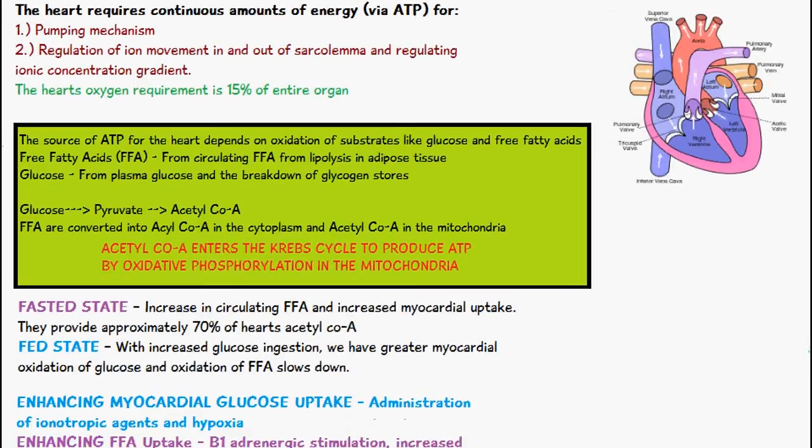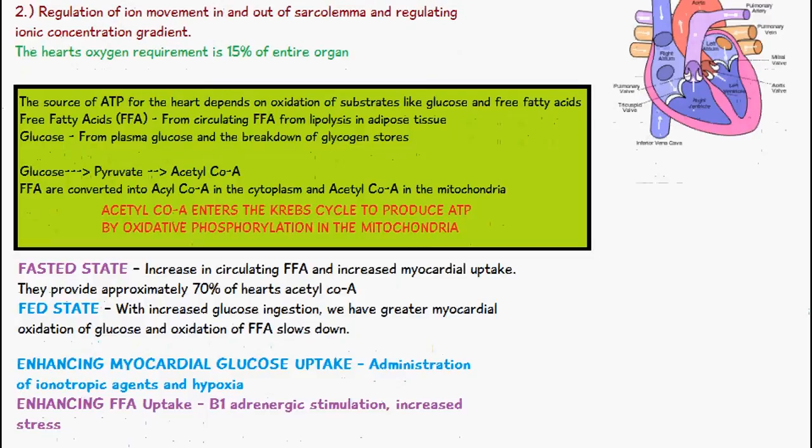Glucose is converted into pyruvate and then into acetyl-CoA, and free fatty acids are converted into acetyl-CoA in the cytoplasm and acetyl-CoA in the mitochondria. Acetyl-CoA then enters the Krebs cycle and is used to produce ATP by oxidative phosphorylation in the mitochondria.